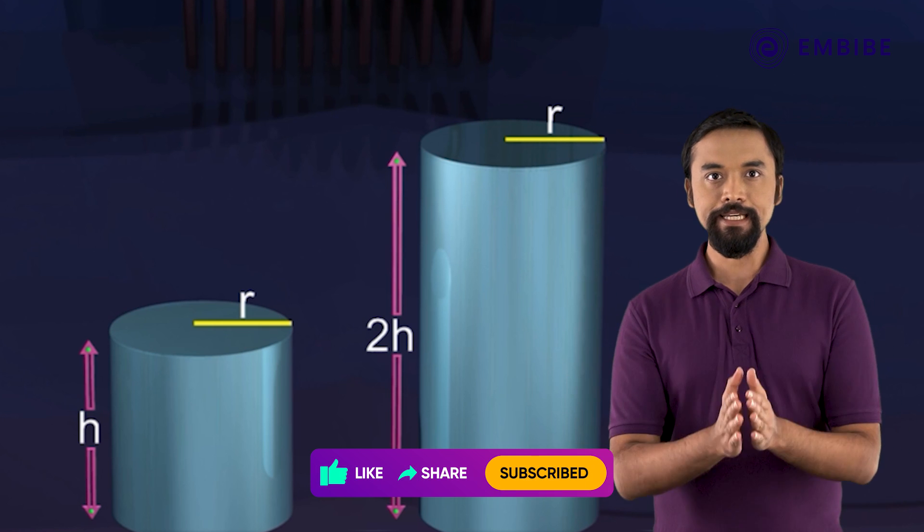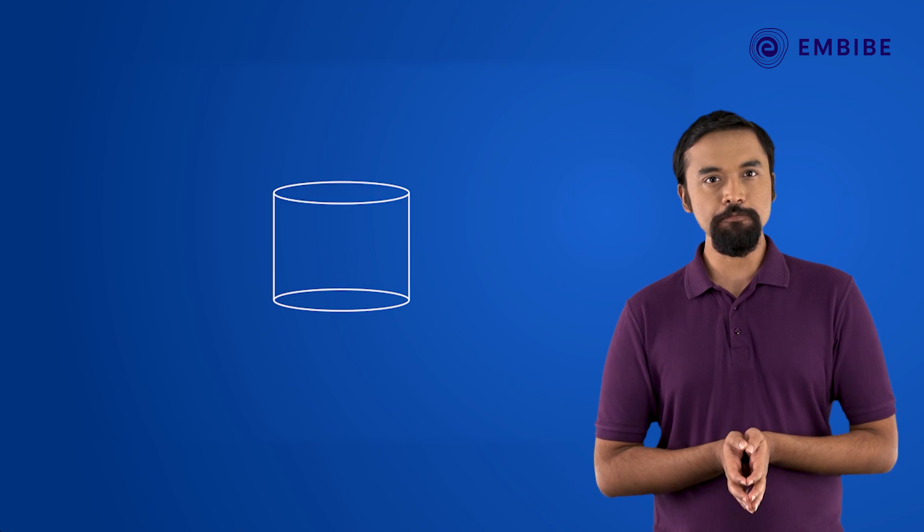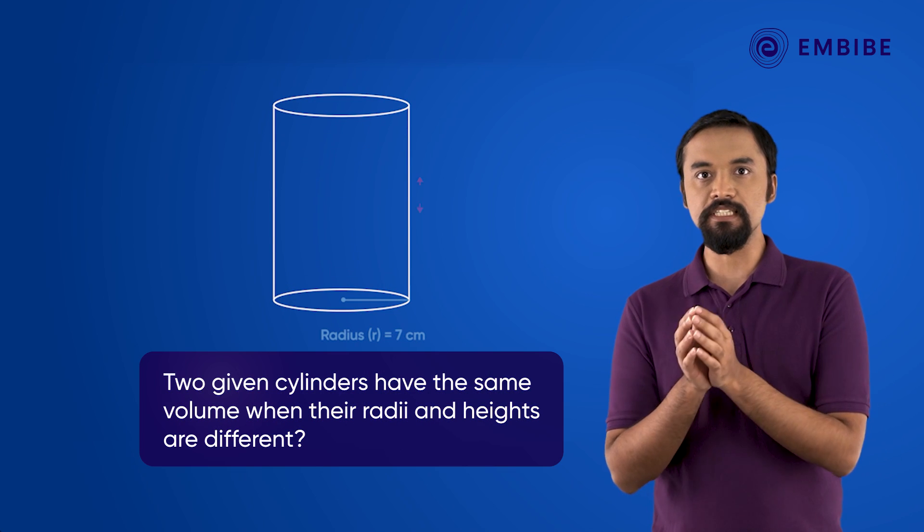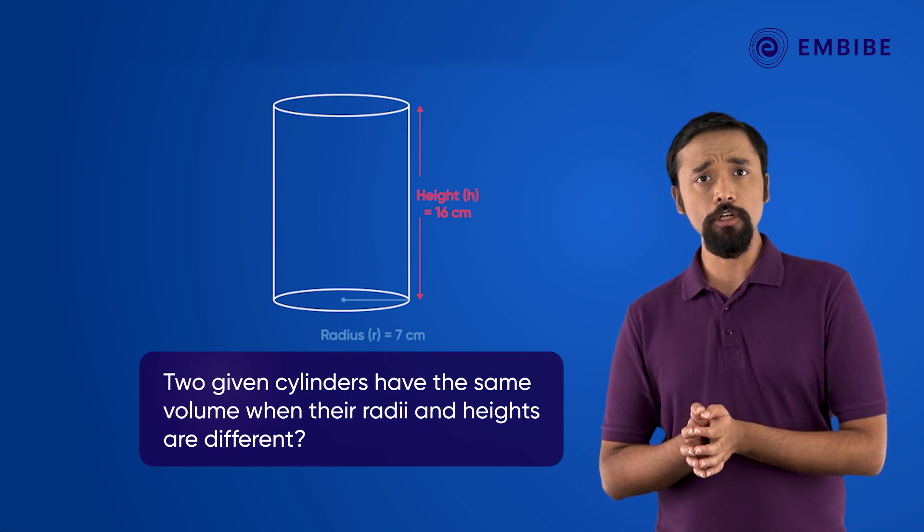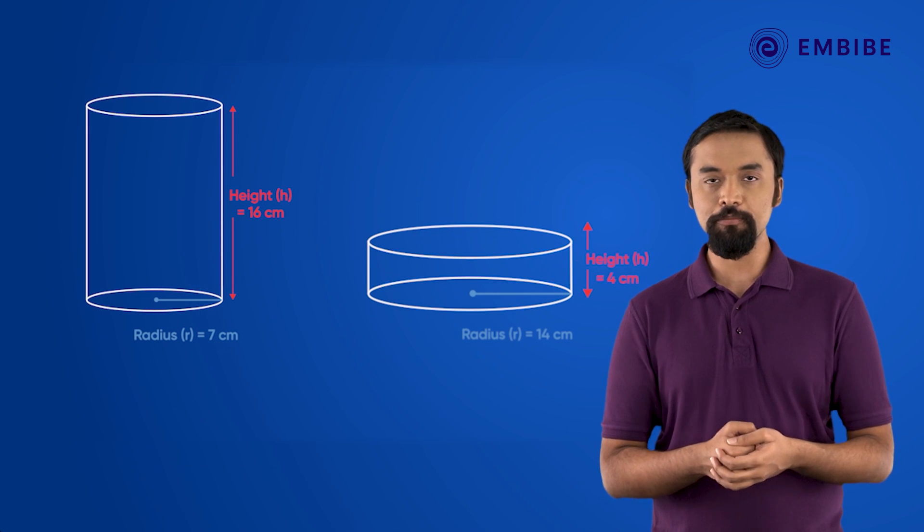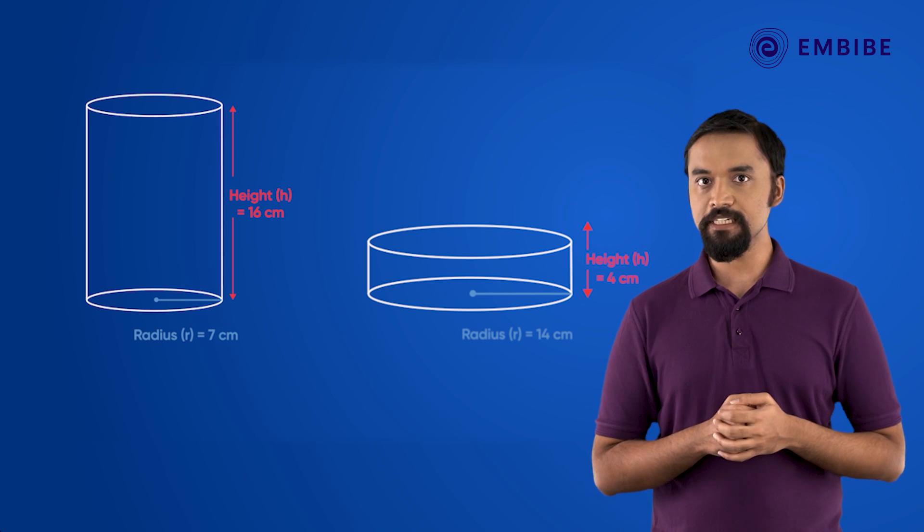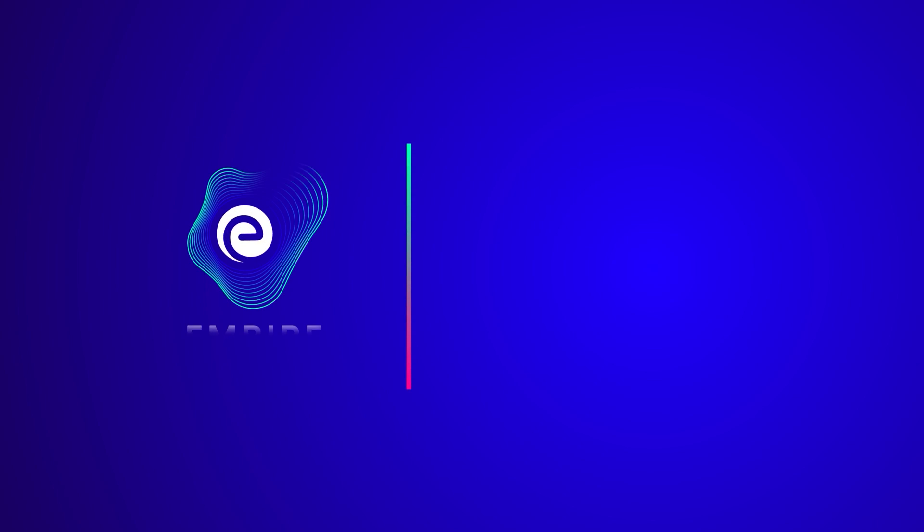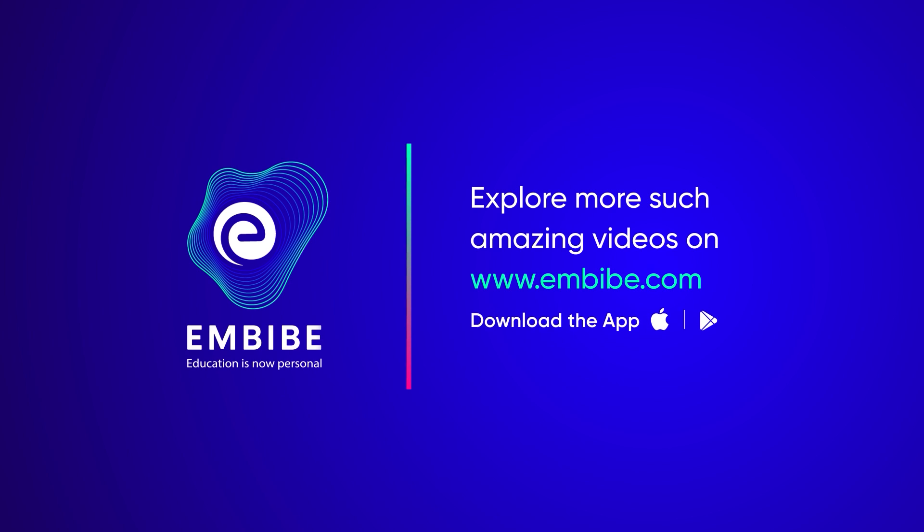Now think about this: Is it possible that two given cylinders have the same volume when their radii and heights are different? We will be talking more about this in our upcoming sections. Keep imbibing. We believe in you.